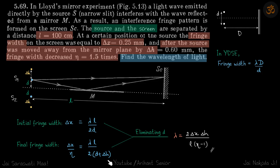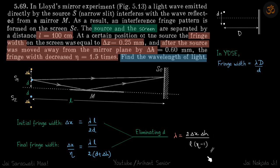When the source is moved away by delta h, the new distance between the slits becomes 2(d + delta h). So the new fringe width is delta x over eta, since the fringe width decreased eta times. From here, the only unknown is d, so we eliminate d to find lambda in terms of the given quantities.